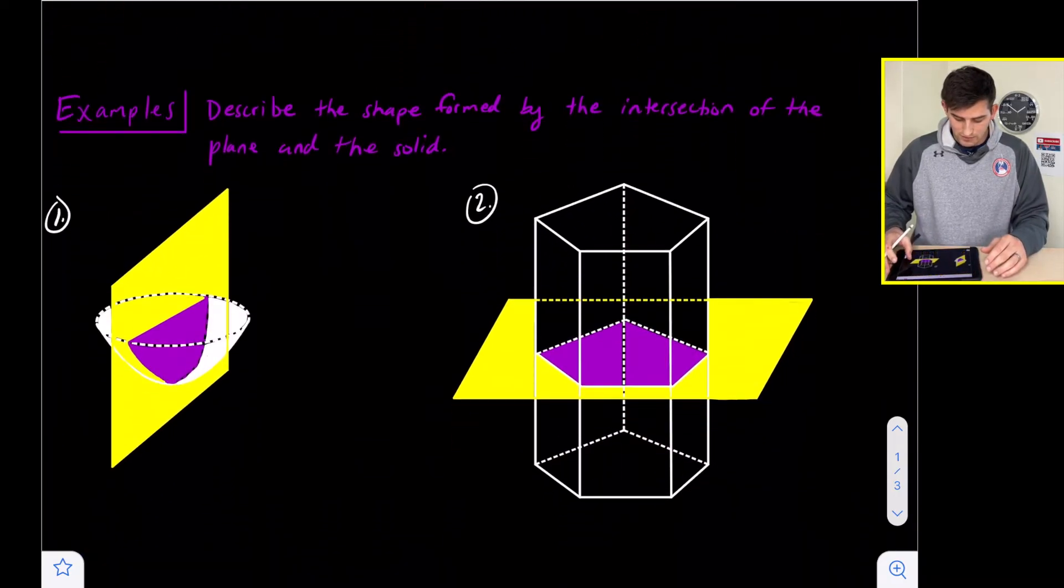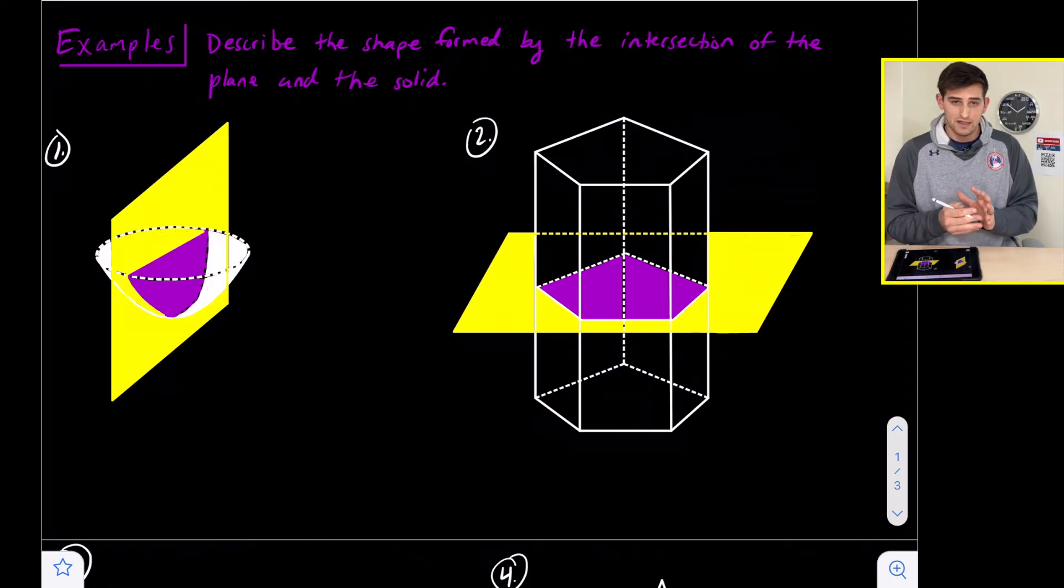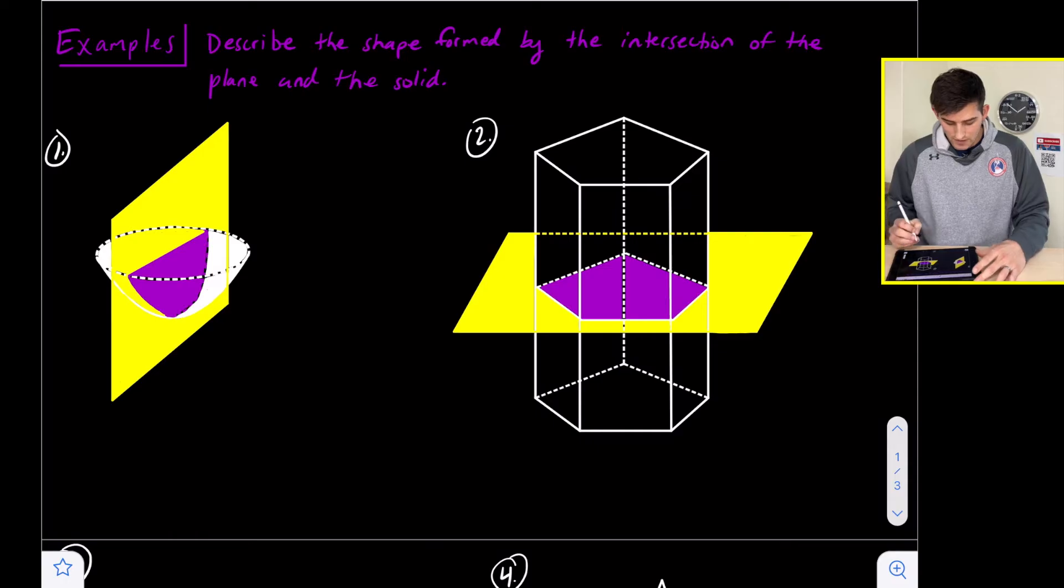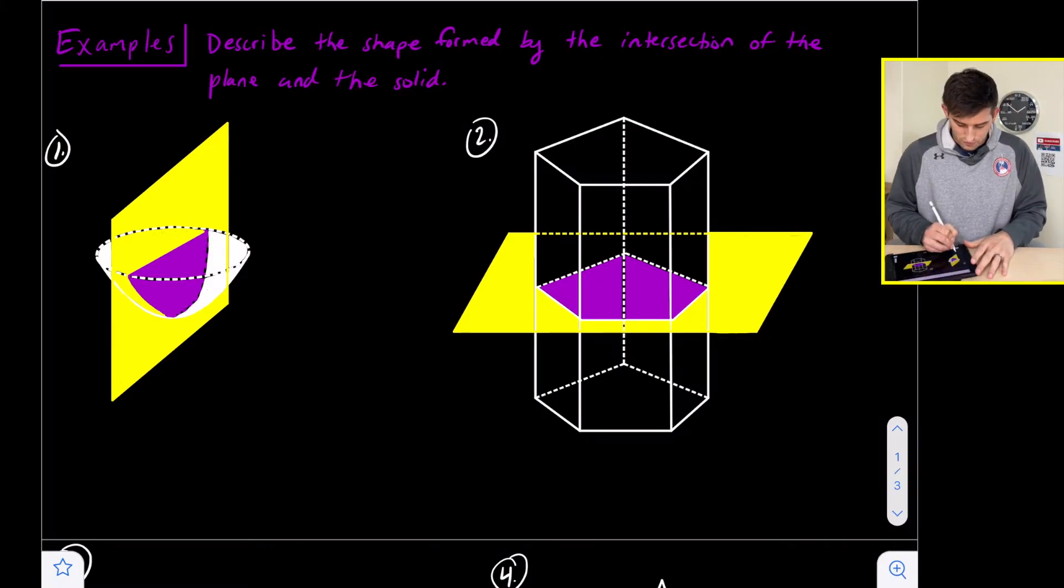We're going to look at some different examples of various shapes and describe the shape that is formed from the plane intersecting the solid—that's what we call the cross section. For number one, we have a hemisphere with the plane slicing straight through vertically, which forms a semicircle cross section.